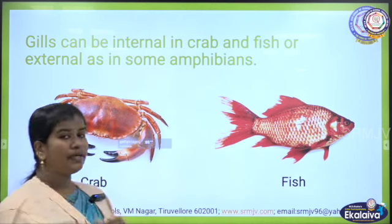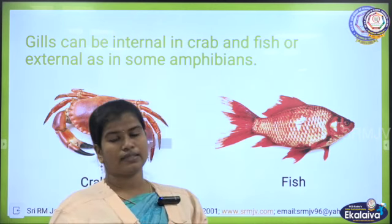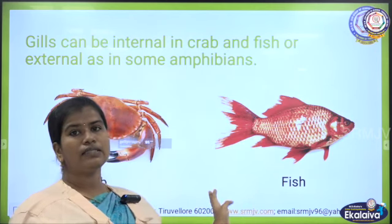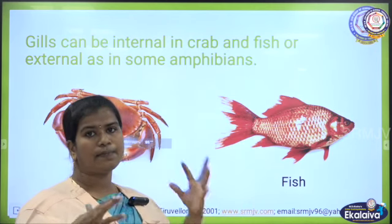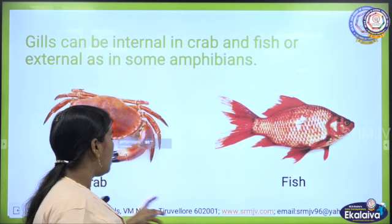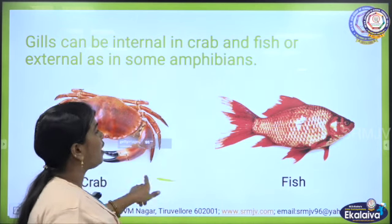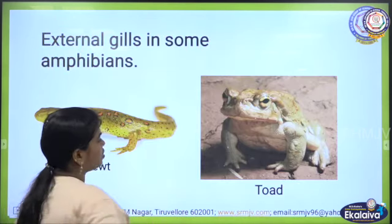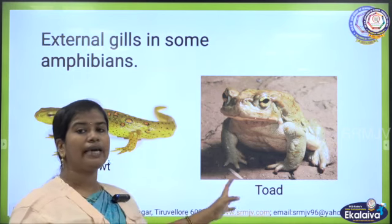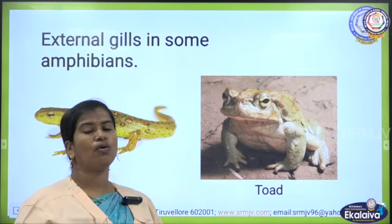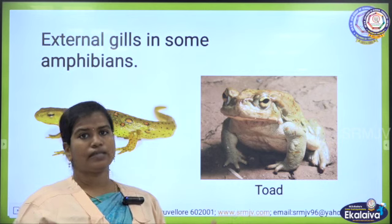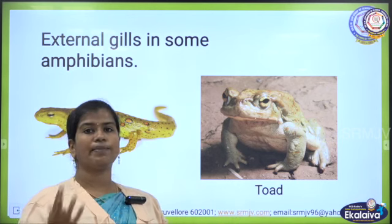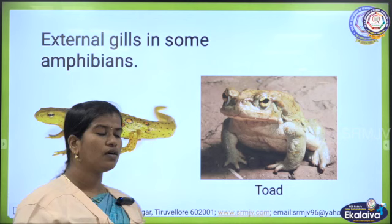Gills can be internal as well as external. In the case of crab and fish, gills are internal — present internally. But in the case of amphibians like newt and toad, they have external gills. The mechanism is the same: oxygen diffuses into the body and carbon dioxide diffuses out.